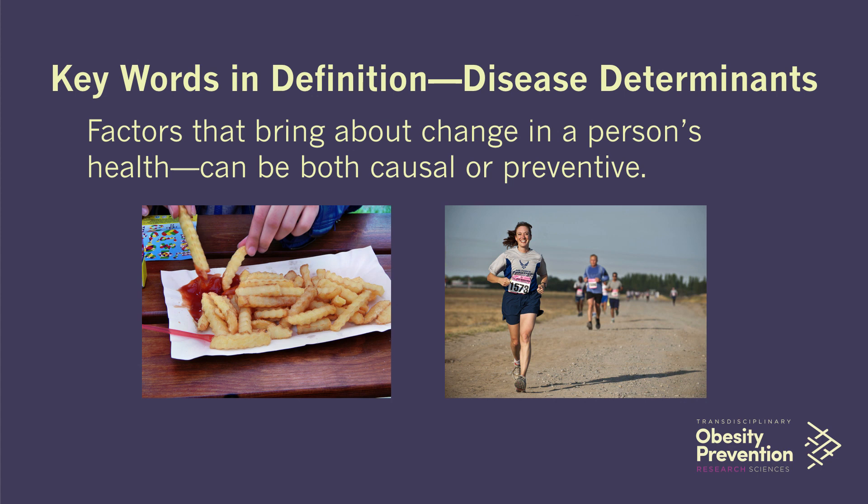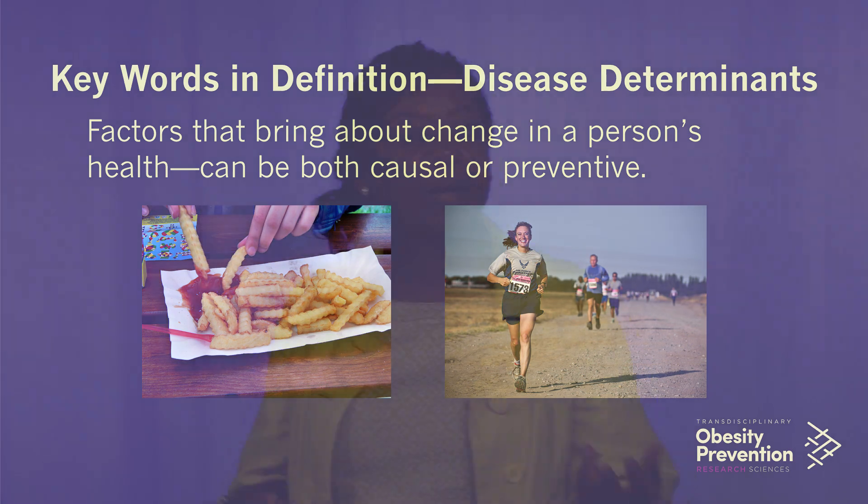In speaking of factors, we also talk about disease determinants in epidemiology. What are the factors that might bring about a change in a person's health? When we think about obesity, for example, individuals who exercise more might be less likely to be overweight or obese because they're burning more calories. Or individuals that have diets that are more energy-dense are more likely to be overweight and would be at higher risk for obesity. So what are these factors that play some role with respect to why people might have obesity?